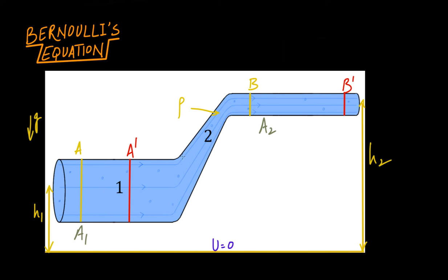We will assume there is a liquid whose density is rho flowing inside this pipe. The velocity at the lower section is v1 and the velocity at the higher section is v2.